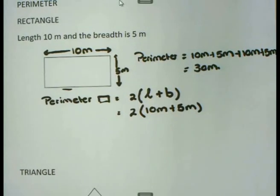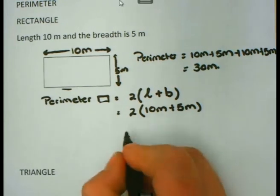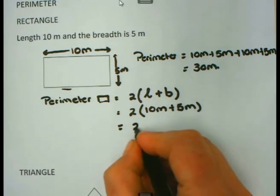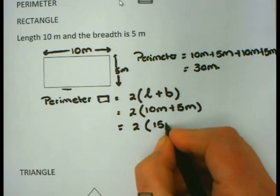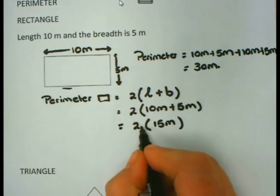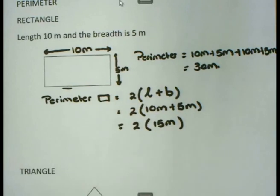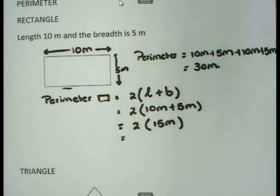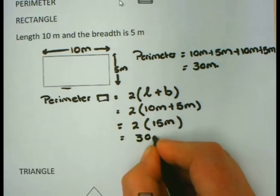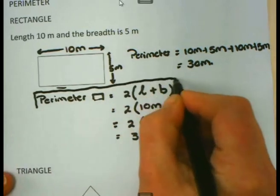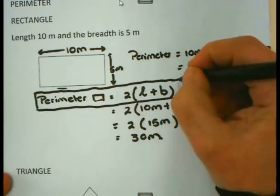According to our BODMAS rule, you must remember that we always work out the bracket first. So in the bracket we are having 10 meter plus 5 meter, so I am going to add that first. That gives me 15 meter. And now if I am going to work out the final step, there is no operation written, and that means that it is multiplication. So this will become 2 times 15 meter for a total of 30 meter. Exactly the same as what I got before. But when I work with the formula for a rectangle, I am going to use this formula.